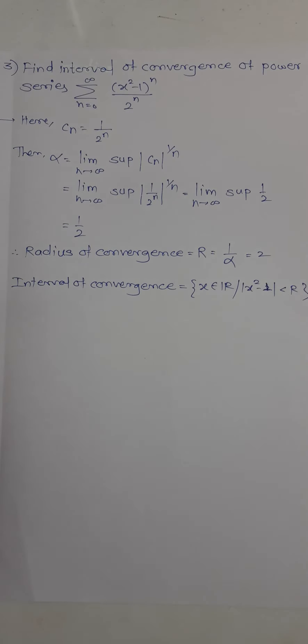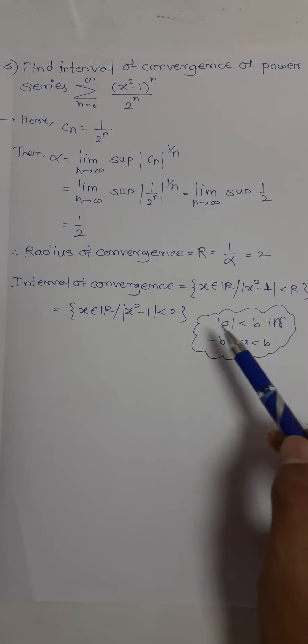Now I'll put the value of R, which is 2. I'll use a result: mod a less than b means minus b less than a less than b. Here b is 2 and a is x squared minus 1.